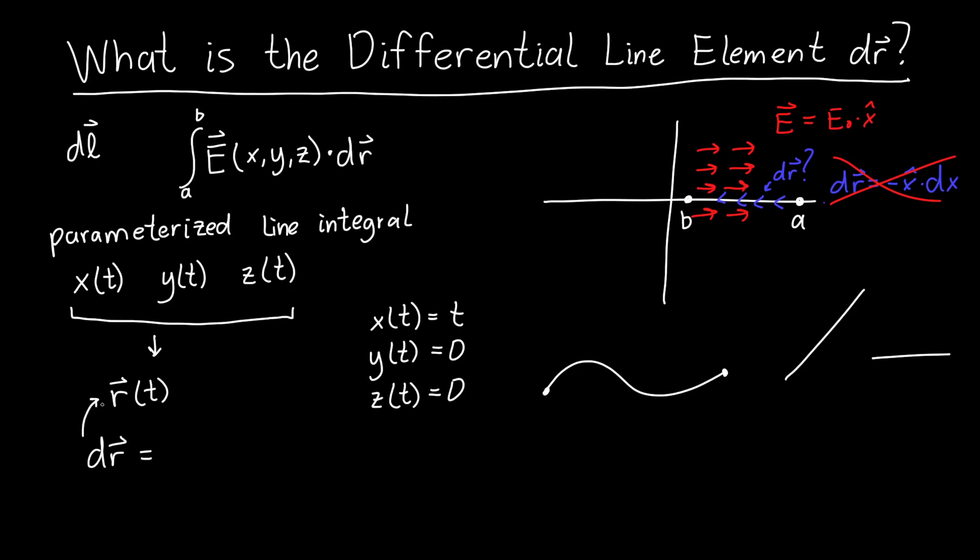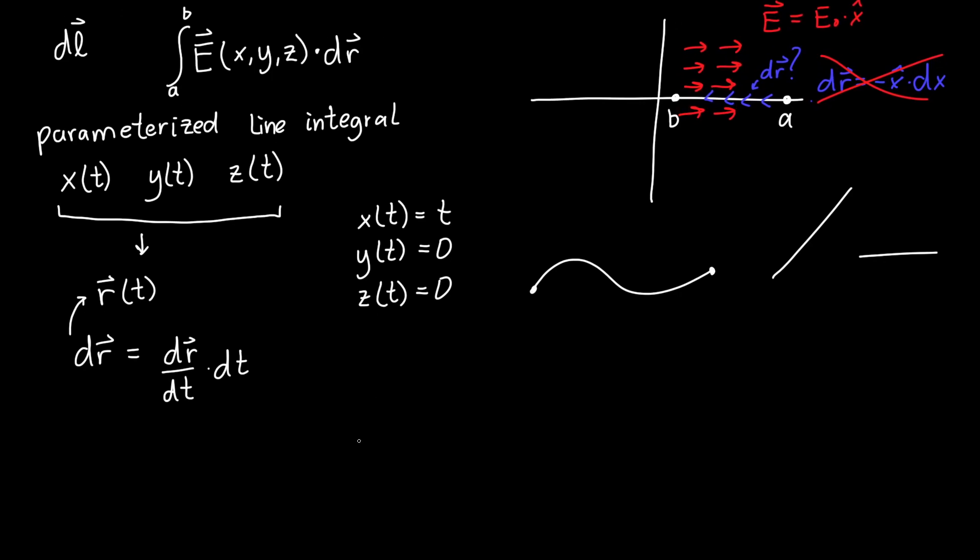Now to figure out what dr is, we can use the chain rule. So dr is actually related to r. In fact, dr is just equal to the derivative of r with respect to t times dt. And so if we actually take this derivative, in this case dr/dt, we can differentiate each of the components separately. So dx/dt is just equal to 1, dy/dt is equal to 0, and dz/dt is also equal to 0. So we can write this out in terms of its components: dr is x hat times dx/dt plus y hat times dy/dt plus z hat times dz/dt, all multiplied by dt.